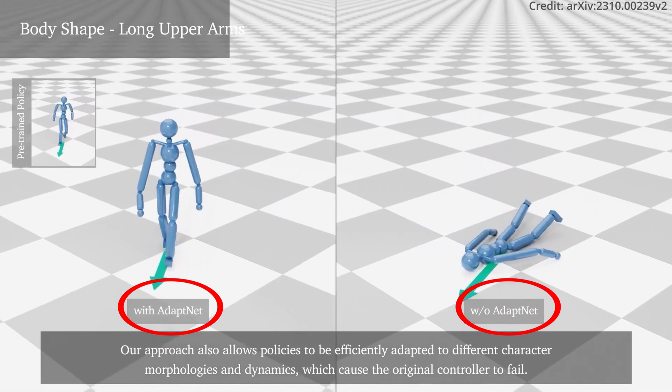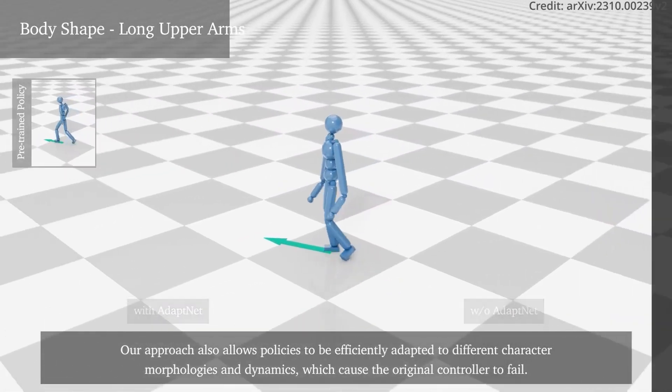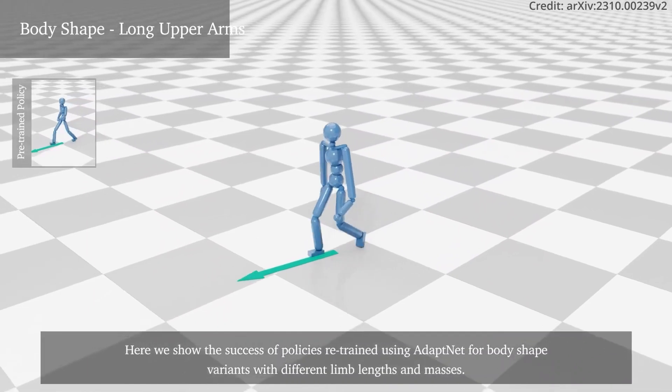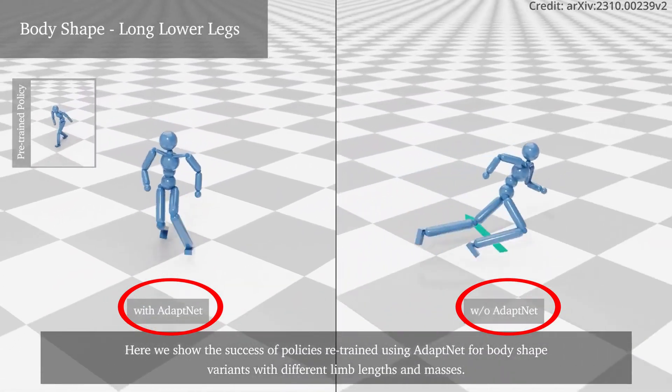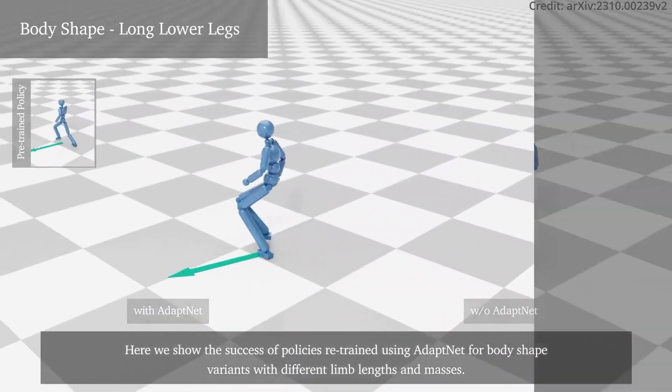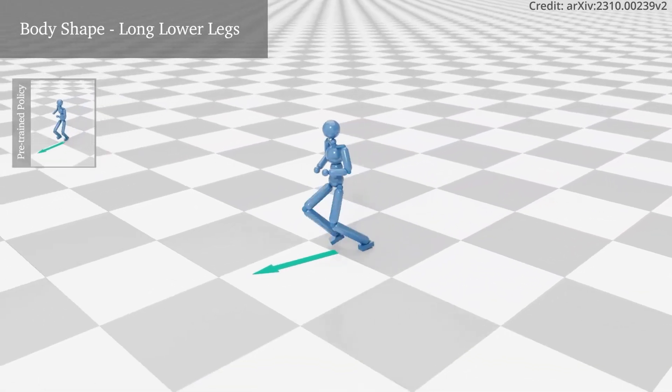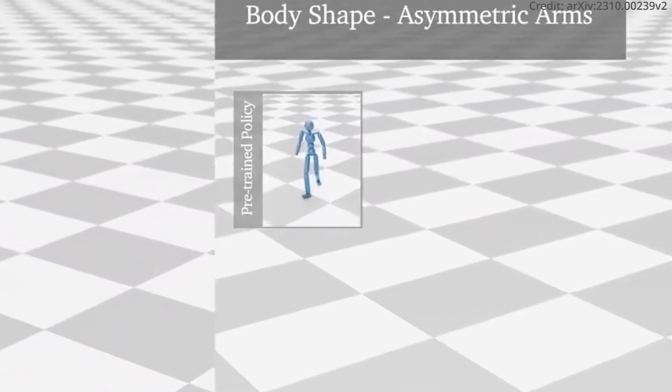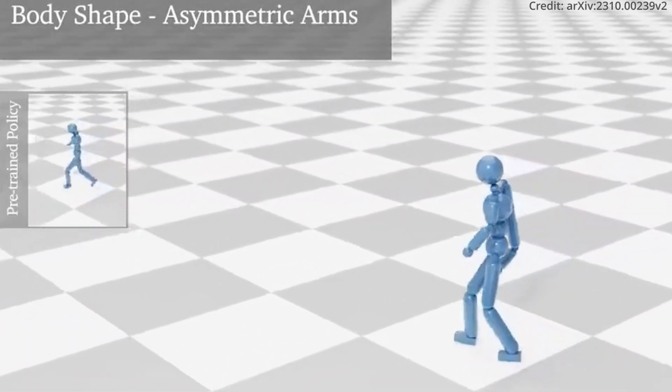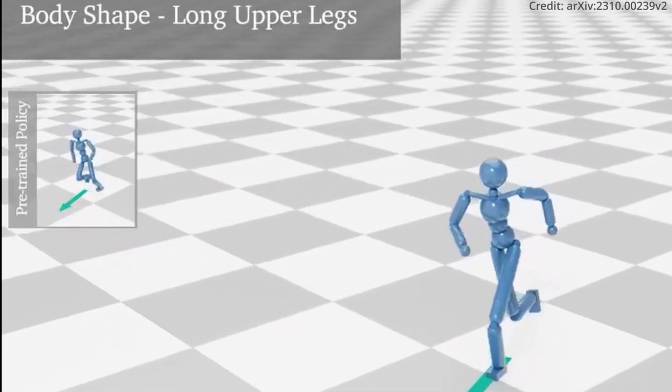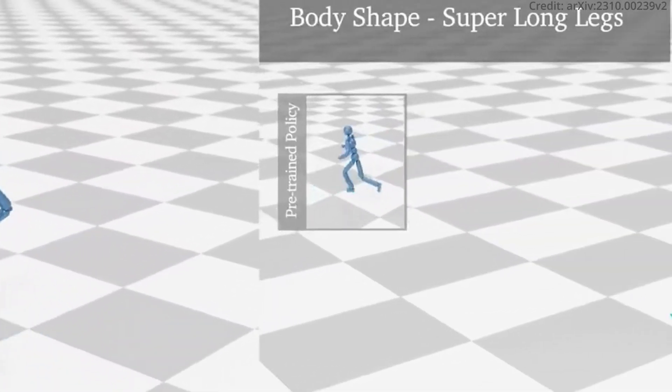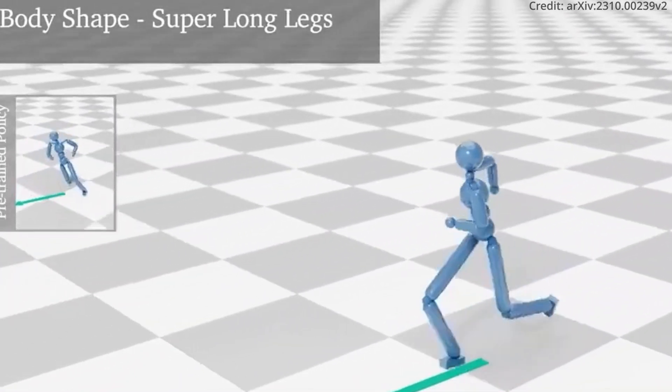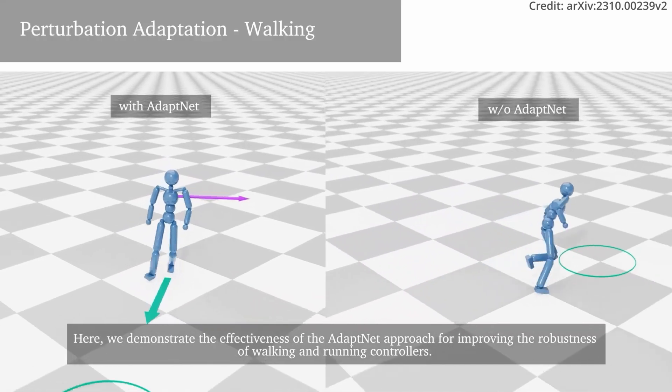In a world where one size doesn't fit all, AdaptNet shines by allowing policies to be efficiently adapted to different character morphologies and dynamics too. From body shape variants, different limb lengths, to varying masses, policies retrained using AdaptNet showcase success and effectiveness, ensuring that characters maintain balance and control even when morphological changes are introduced.